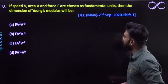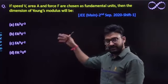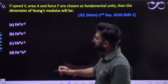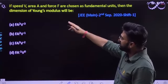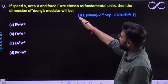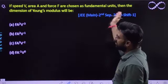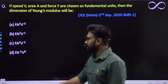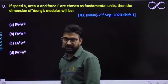This is a dimension question. Dimension analysis ka question hai yeh. The question says: if speed V, area A, and force F are chosen as fundamental units, then the dimension of Young's modulus will be. Kya hoga Young's modulus ki dimension hamein find out karna hai.